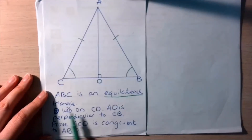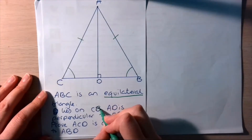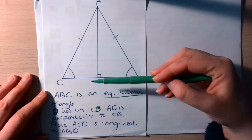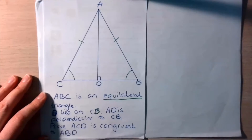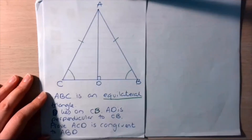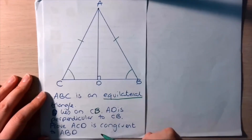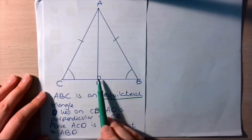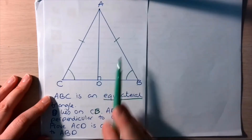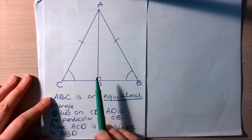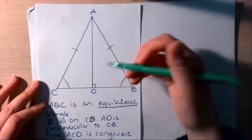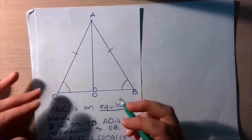We're told that D lies on CB, and AD — this line here — is perpendicular to this line here. We're to prove triangles ACD and ABD are congruent. The RHS rule would be a good one to use here — that is right angle, hypotenuse, and a side. What we've got is a right angle, some sides that are equal, and actually a common side down the middle.